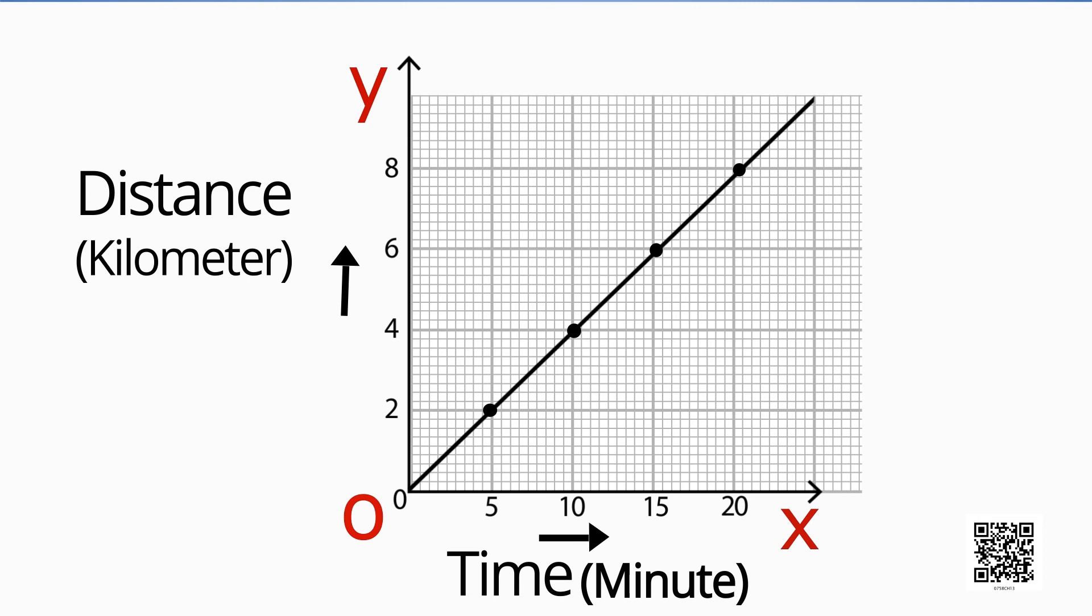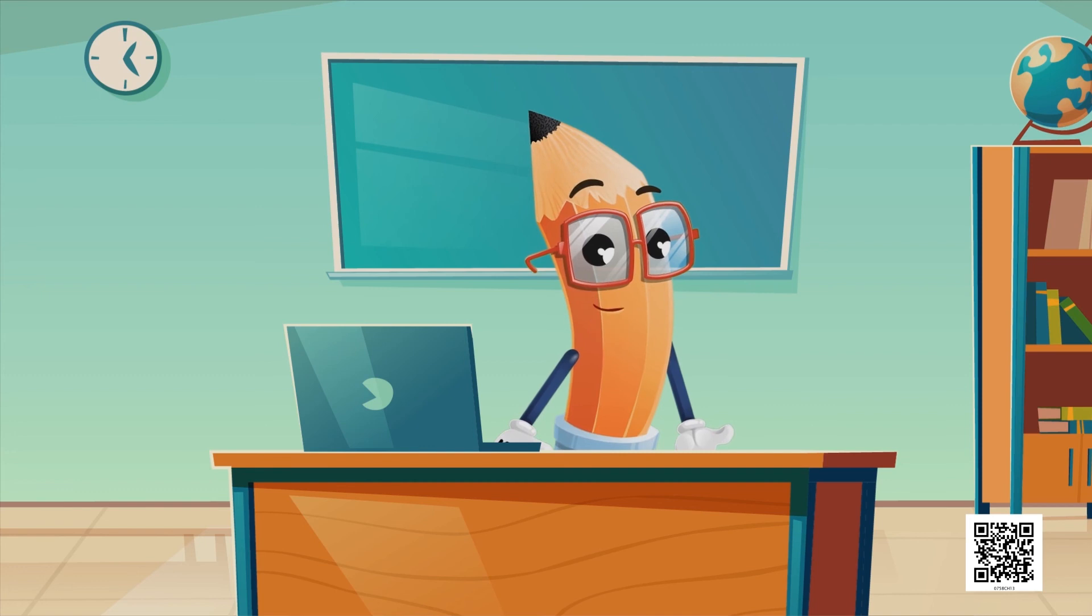Now as you are looking here, we have a straight line graph, because here the car travels equal distance in equal interval of time. The slope of a distance-time graph indicates the speed of car.